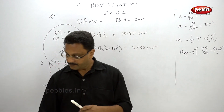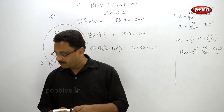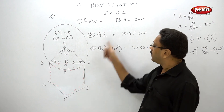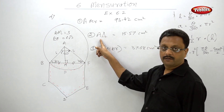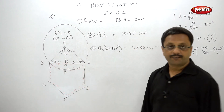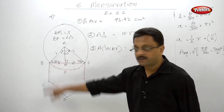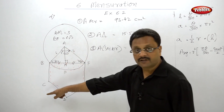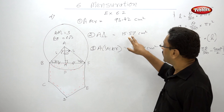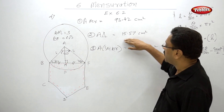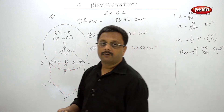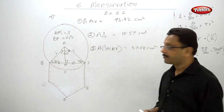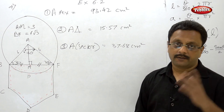Now let us see what they have asked. They asked for the area of segment BPF: this equals area of sector minus area of triangle. Then they asked for the complete shaded area: this equals area of hexagon minus area of triangle, combined with the segment. Pause your video, finish this sum, and check your answer thoroughly.